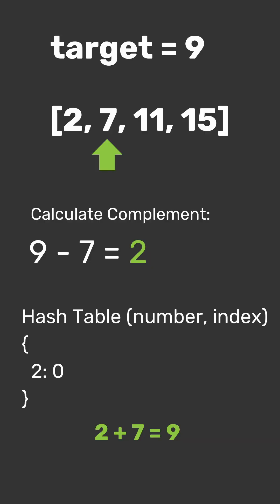So we have our pair: 2 plus 7 equals 9. Hash tables help us avoid unnecessary comparisons and speed things up dramatically, eliminating the need for nested loops. While this increases space complexity, the efficiency gained is worth it.